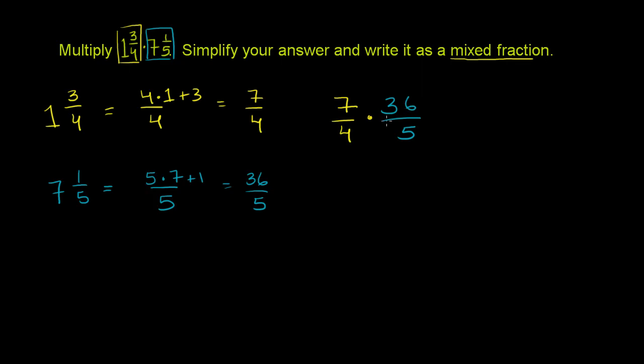So let's see if we can simplify this first. Both our numerator and our denominators have numbers that are divisible by 4. So let's divide both the numerator and the denominator by 4. So the numerator, we can divide the 36 by 4 and get 9. And if you divide something in the numerator by 4, you have to divide something in the denominator by 4. And the 4 is the obvious guy.